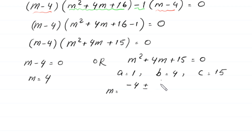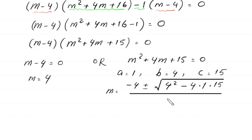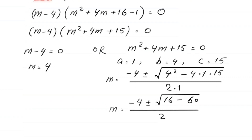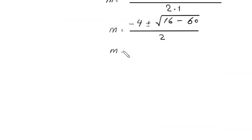By the quadratic formula, m equals negative 4 plus or minus square root of (4 squared minus 4 times 1 times 15) divided by 2 times 1. This gives m equals negative 4 plus or minus square root of (16 minus 60) divided by 2.